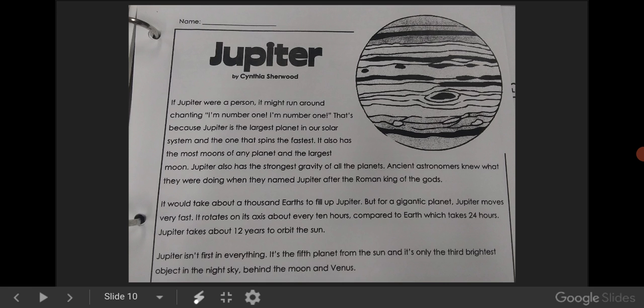Jupiter isn't first in everything. It's the fifth planet from the Sun, and it's only the third brightest object in the sky, behind the Moon and Venus.